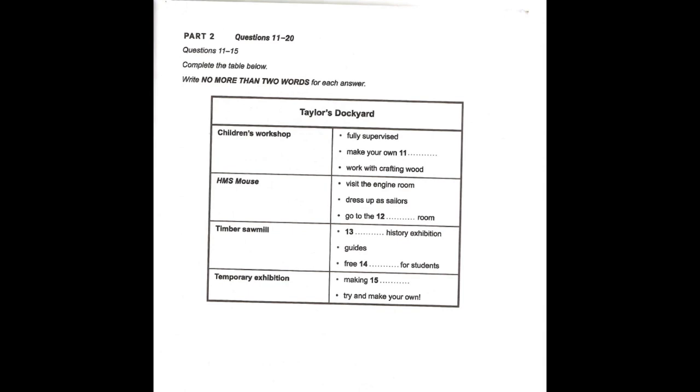If, however, history is more your thing, we have a special place for you to visit, which is as much for adults as it is for children. The history of the dockyard can be found in the timber sawmill, which I'll show you on the map in a moment. Inside the mill, you'll see an exhibition on the naval history of the site, as well as knowledgeable guides who will be able to answer any of your questions. In addition to getting information from the guides, you'll find education packs for students wishing to do any further research on maritime history, and these are free.